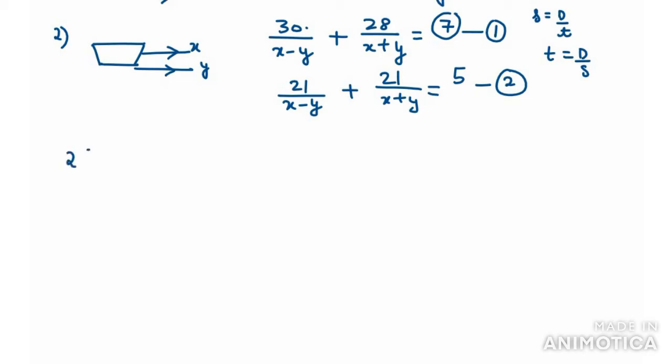For the first equation, we can take 2 as common. So 15 over x minus y plus 14 over x plus y equals 7 over 2. This is equation number A.